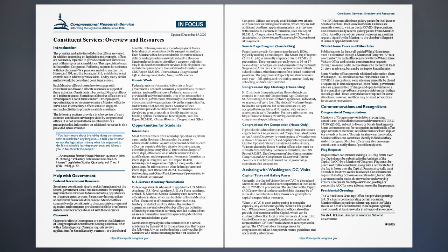Grants Work. Federal grants may be available for state or local governments, non-profit community organizations, research entities, and small businesses. Federal grants are not provided directly to individuals; they often are awarded to state or local governments, which may sub-award them to other community organizations. Given the competition for and limitations of federal grants, member offices sometimes provide constituents with information about developing grant proposals or identifying alternative funding options. For more on federal grants, see CRS Report RL 34035, Grants Work in a Congressional Office.